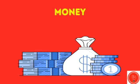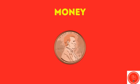Let's talk about money. This coin is a penny. A penny is worth one cent. So this is how we can represent the number one with money. And we can also write it as one cent this way.